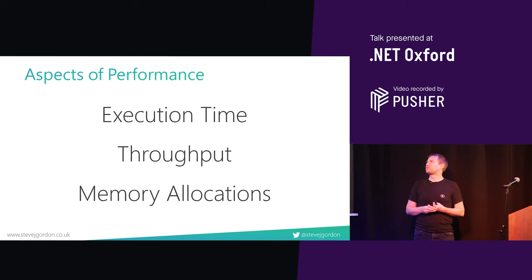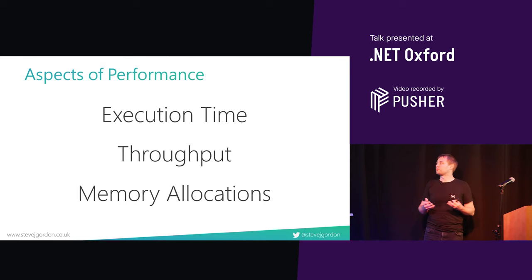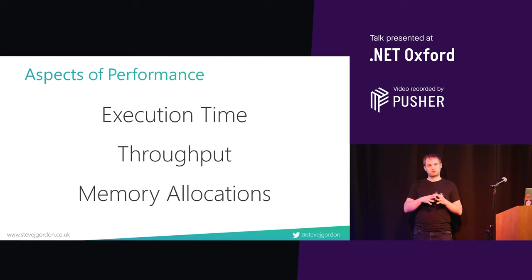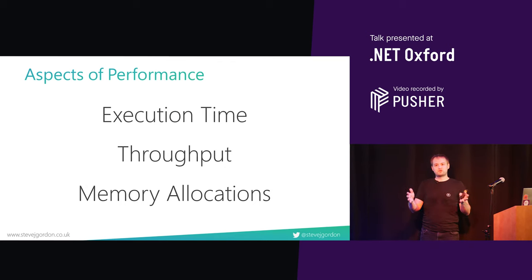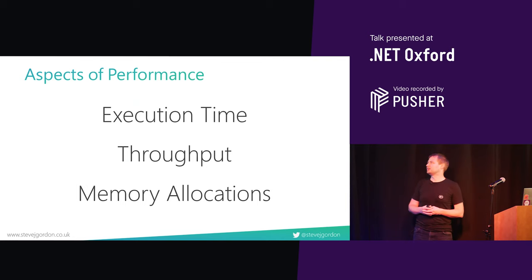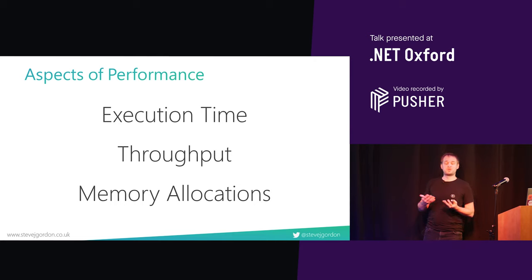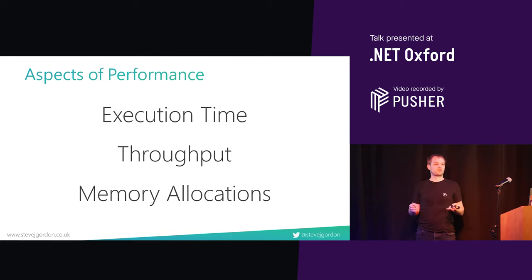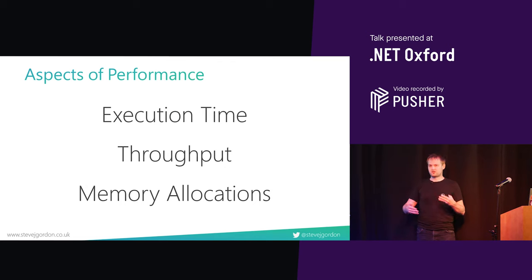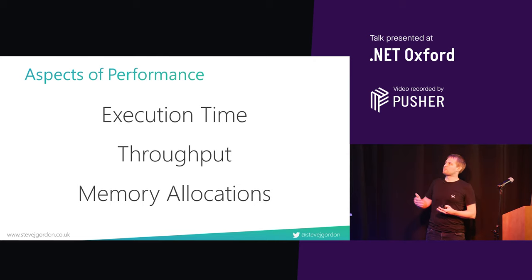Let's start with aspects of performance. For me, the three things that jump out when I think about performance are these headline measurements. The first is execution time — how quick is my code. That measurement depends on what you're actually looking to measure: you might be measuring a whole flow through your application, an entire request in a web application, or individual parts of your code base. Typically, the quicker you can make your code execute, the higher your throughput will be. Throughput is a slightly easier metric to describe to someone in the business — how many requests per second can your application handle, or how many messages can you process off a queue.